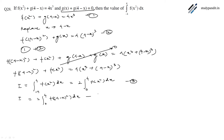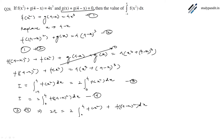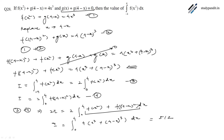Let these be equations 3 and 4. Adding equations 3 + 4, we will have 2I = 2 times the integral from 0 to 4 of [f(x²) + f((4 - x)²)] dx. From our earlier result, the value of f(x²) + f((4 - x)²) = 4[x³ + (4 - x)³], so substituting and integrating gives the answer 512.